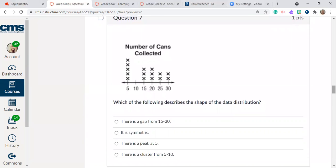Question number seven. Same graph, number of cans collected. Which of the following describes the shape of the data distribution? There is a gap from 15 to 30. It is symmetric. There is a peak at 5. There is a cluster from 5 to 10.